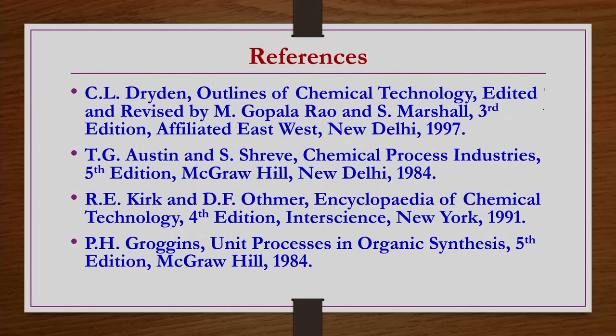Other references include the Encyclopedia of Chemical Technology by Kirk and Othmer, and Unit Processes in Organic Synthesis by Groggins. Primarily, if you have the first or second book, or both, it is going to be very helpful for your coursework. Thank you.